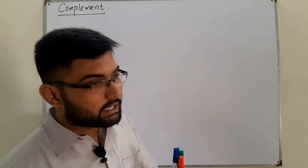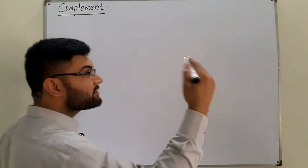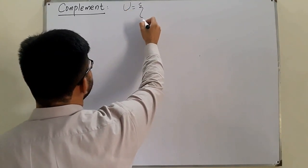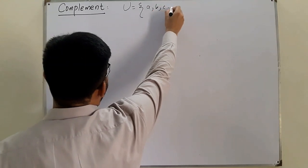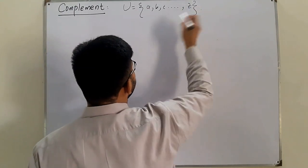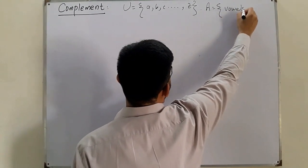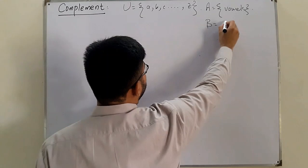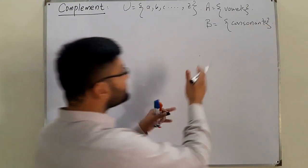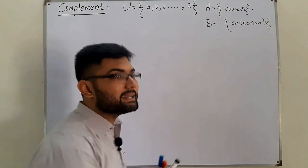So what is a complement? Let's come to an example. You have studied in previous classes about the universal set. Let's say I have a universal set which is A, B, C up to Z. You know about subsets, so I can make a first subset A as the set of vowels: A, E, I, O, U. And I can make another subset B of consonants.